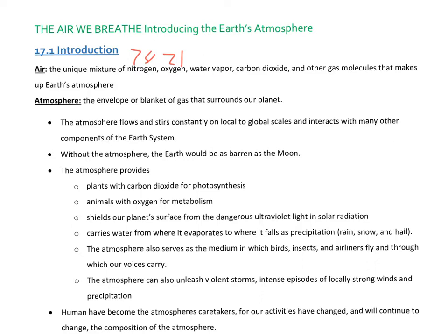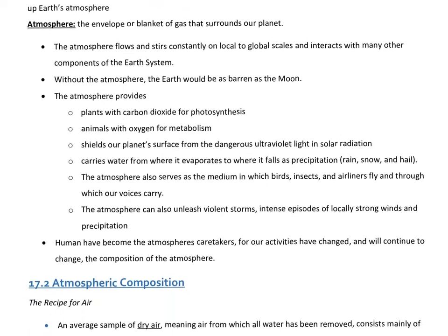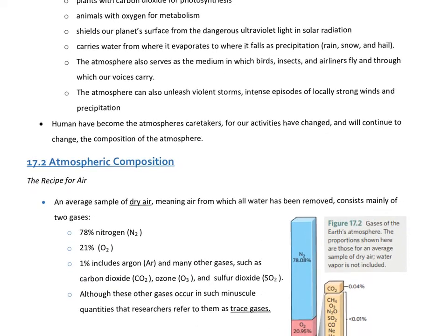That UV is actually what helps to tan your skin. Another day maybe we'll talk about the different types of UV that make it through. Also, a bird or an airplane can't just fly through nothing — there is a medium there, and that medium is the gases or the air. And then lastly, the atmosphere unleashes violent storms. So we will spend some time talking about different storms like thunderstorms and hurricanes — all fun topics actually. We are the caretakers of the earth, the caretakers of the atmosphere.